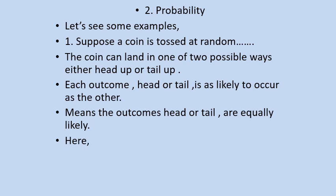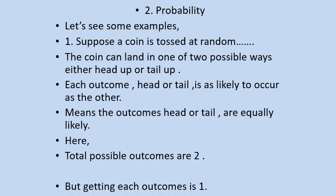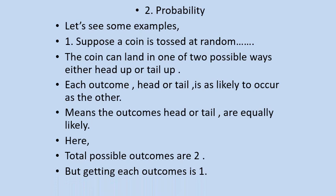So here total possible outcomes are two. When we toss a coin, total possible outcomes are two, but getting each outcome is one.